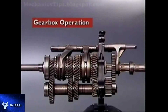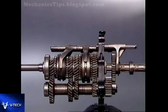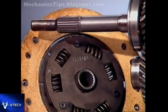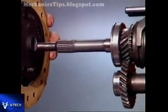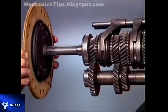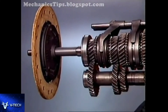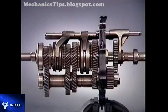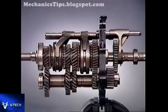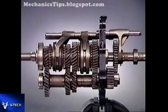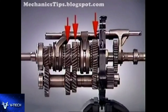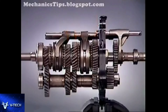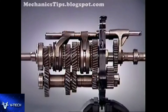This section examines gearbox operation in a rear-wheel drive manual transmission. The splines on the input shaft engage with the splines of the clutch driven plate. With engine rotation and the clutch engaged, the input shaft transfers its motion through the counter shaft to rotate the gears on the main shaft.